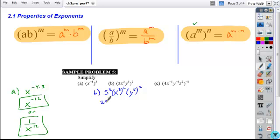So 5 squared simplifies to 25. Power to a power, you get x to the 3 times 2, or 6, y to the 5 times 2, or 10. And so this would be the form of your solution, or simplified form.